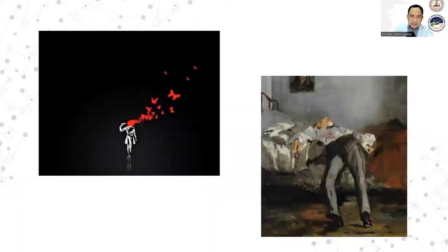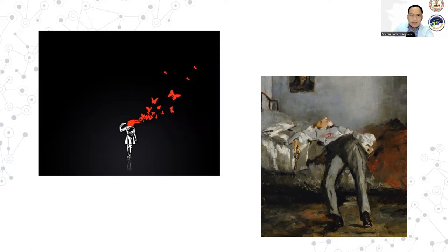But a suicidal person is in so much pain that they can see no other option. Suicide is a desperate attempt to escape suffering that has become unbearable. They are blinded by feelings of self-loathing, hopelessness, and isolation. A suicidal person can see any way of finding relief except through death. But despite their desire for the pain to stop, most suicidal people are deeply conflicted about ending their own lives. They wish there is an alternative to suicide, but they just can't see one.